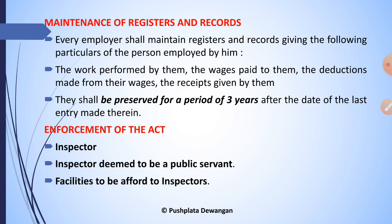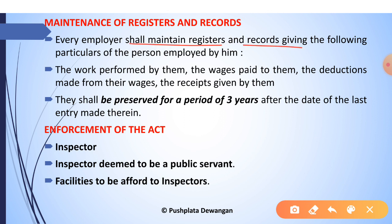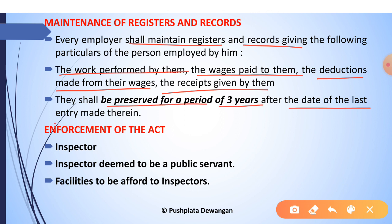Section 13A provides for the maintenance of registers and records. Every employer shall maintain registers and records giving particulars of persons employed by him, including work performed by employees, wages paid, deductions made from their wages, and receipts given to them — that is, pay slips. These records shall be preserved for a period of three years from the date of the last entry, and shall be in such form as may be prescribed under this Act.